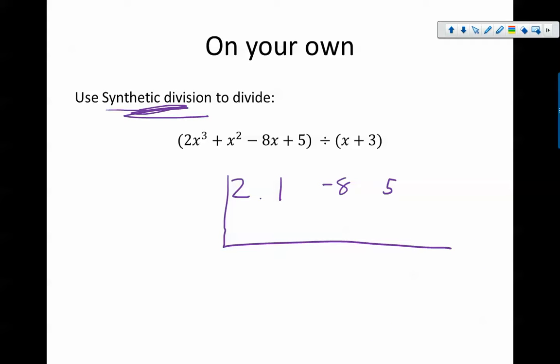We're dividing by x plus 3, so we do what makes 0: negative 3 over here. Remember, opposite what makes 0. Bring down, multiply, add, multiply, add, multiply, add. And these down here are the coefficients of my solution.